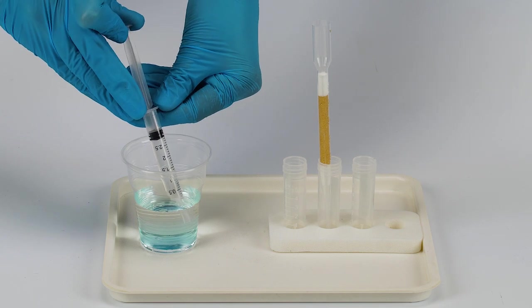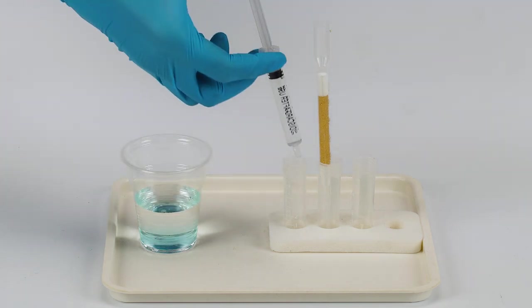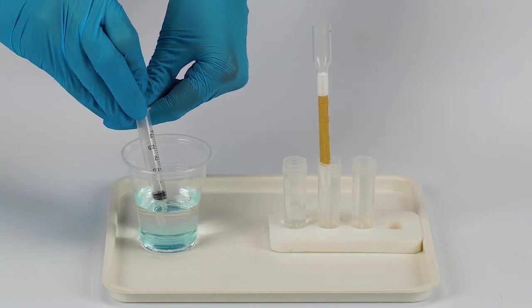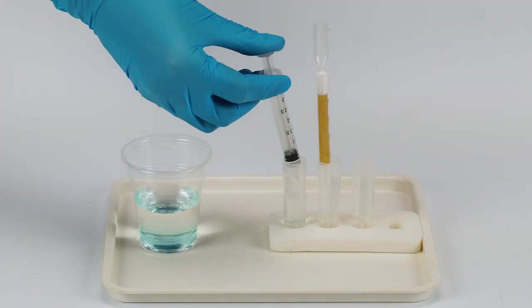Take a sample of contaminated water. Transfer four milliliters of copper sulfate solution from the cup to the first vial using a syringe.